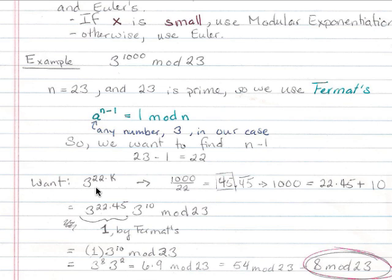Therefore, we want to find 3 to the 22 times some integer k. How am I going to do that? Pretty straightforward. 1,000 divided by 22, 1,000 because that was the exponent up here, equals 45.4545 continued.